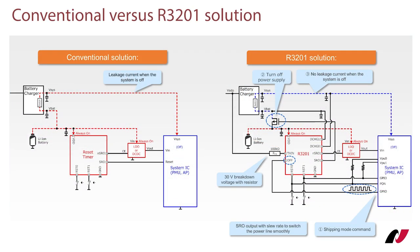On this slide a comparison is shown between a conventional circuit and the solution with the R3201. The conventional circuit is a simple solution, providing a reset cycle only when the two RSD inputs are activated. On the other side, a much more advanced solution including the same reset feature, but also an additional shipping mode and two discharge outputs. Despite the additional features, it still requires only a few extra components.